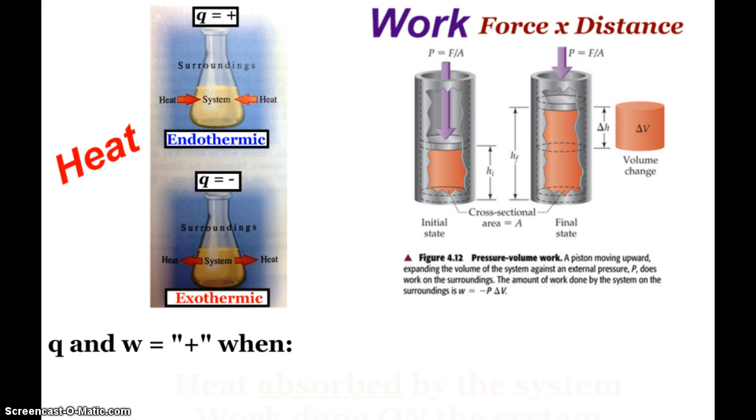Work is force times distance, and you'll spend a lot more time looking at different types of work and calculations in physics. But for us in chemistry, we're interested in pressure volume work. Specifically, when a reaction involves the production of a gas, we can figure out how much work the gas has to do against the atmosphere. And we can measure that in these little cylinders that allow a piston to move.